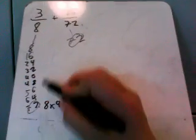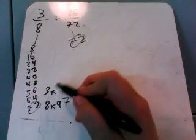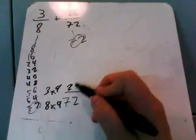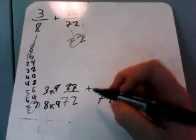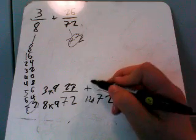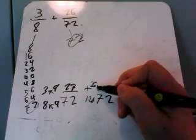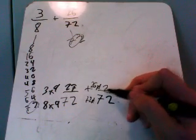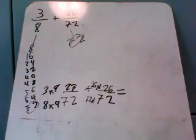I can do 3 times 9 is 27. Now here, I did 72 times 1. So I do 26 times 1 is 26. Now I add them together.